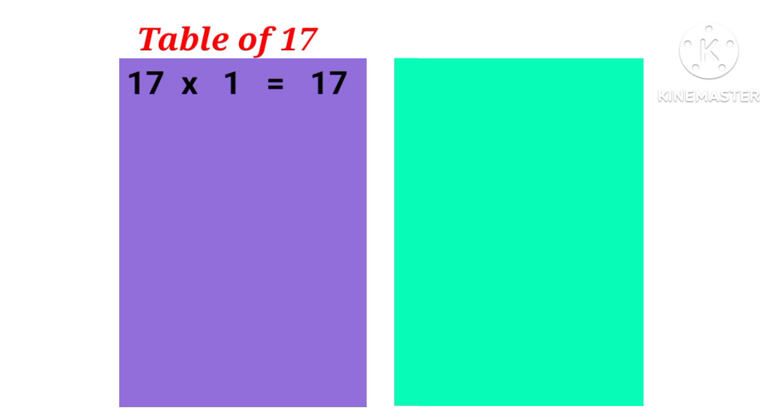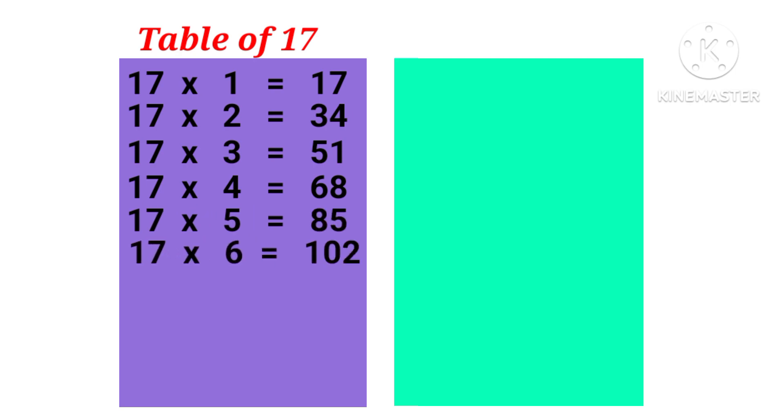17 1s are 17, 17 2s are 34, 17 3s are 51, 17 4s are 68, 17 5s are 85, 17 6s are 102, 17 7s are 119, 17 8s are 136, 17 9s are 153, 17 10s are 170.